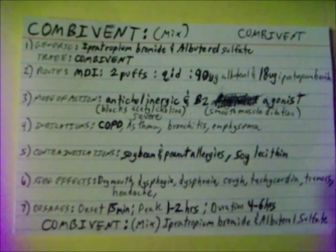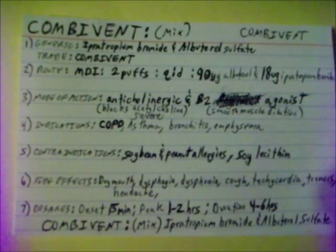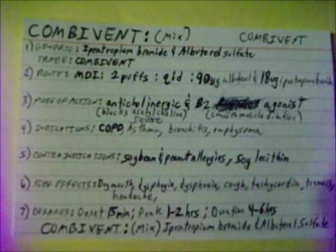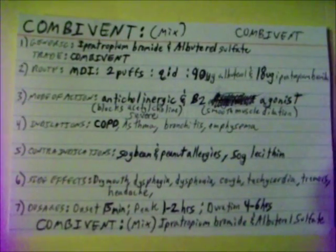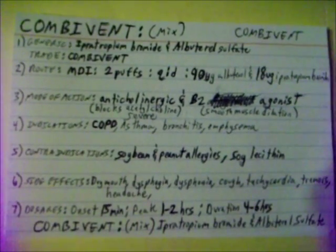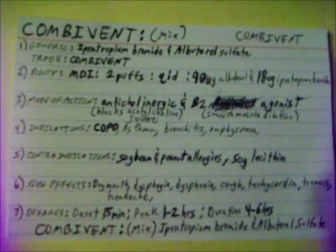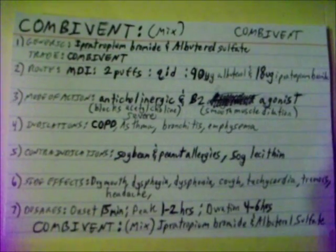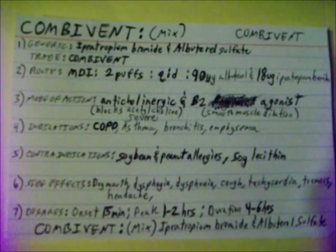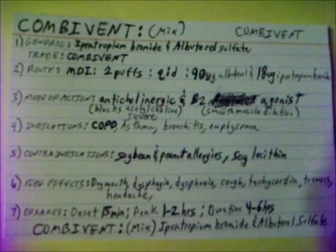Combivent, which is a mix of ipratropium bromide and albuterol sulfate. Trade name: Combivent. Given by metered dose inhaler at 2 puffs QID — 4 times daily. Each puff consists of 90 micrograms of albuterol and 18 micrograms of ipratropium bromide.